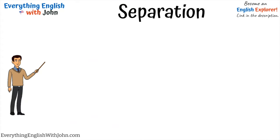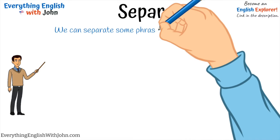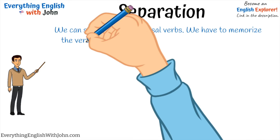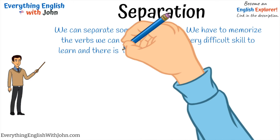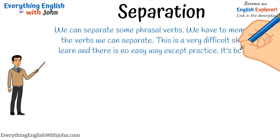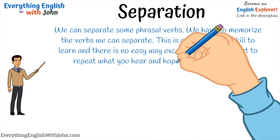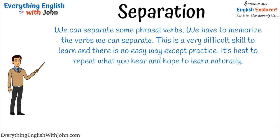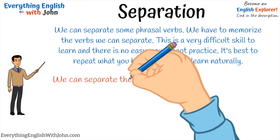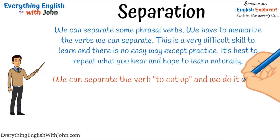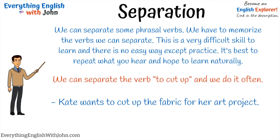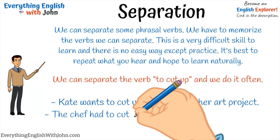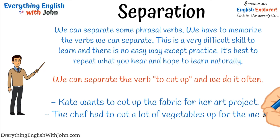Separation. We can separate some phrasal verbs, and we have to memorize the verbs we can separate. This is a very difficult skill to learn, and there's no easy way except practice. It's best to repeat what you hear and hope to learn naturally. We can separate the verb "to cut up" — and we do it often. For example: "She cut up the fabric for her art project." Or: "The chef had to cut a lot of vegetables up for the meal."